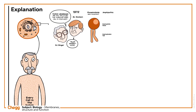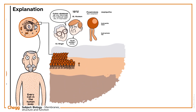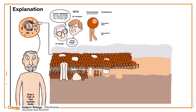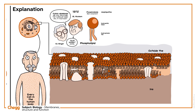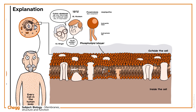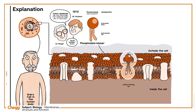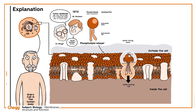These phospholipids are arranged into two layers, making a phospholipid bilayer. Their hydrophobic or water-hating tails point into the centre of the bilayer, and their hydrophilic or water-loving heads point outwards.